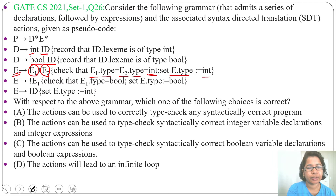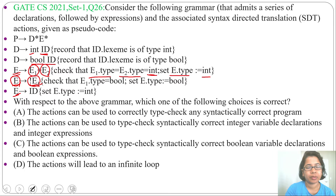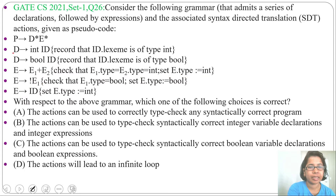Next production: E derives negation E1. Check that E1.type equals bool; if E1.type equals bool, then set E.type also to boolean. Next production: E derives id. Set E.type equal to int — this id can only be integer. You can see that from D we can derive both integer and boolean data types, but from E, when we are generating id, that id can only be integer.